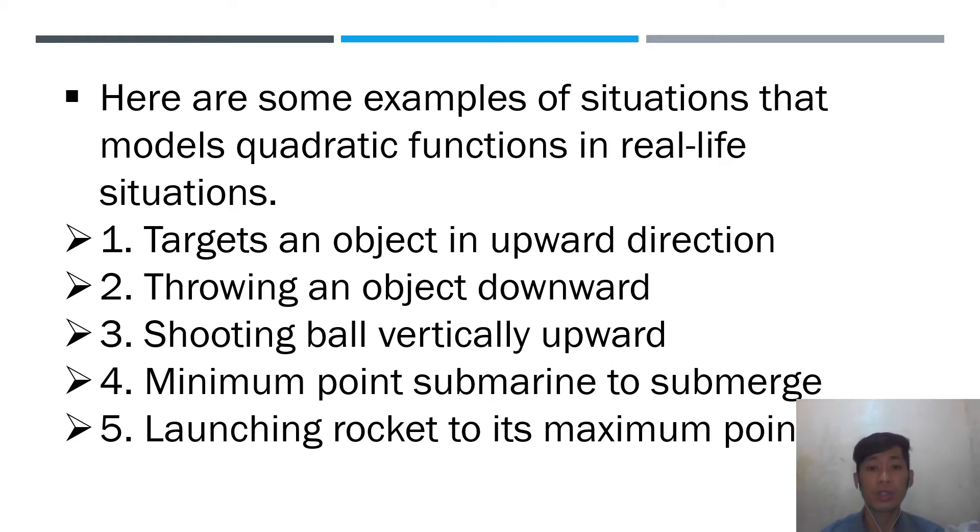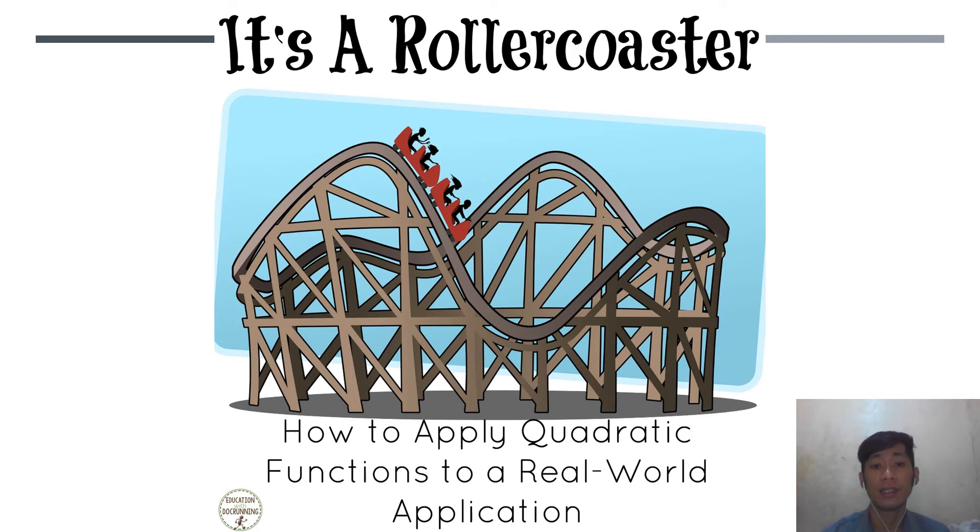So ito yung mga pictures na susunod po na ipapakita po. Yan po yung mga halimbawa na maipapakita natin yung parabola o yung graph of quadratic function. First, a roller coaster. So kung mapapansin nyo po, yung roller coaster, meron po siyang part that is a parabola. Upward, this is downward. Upward, downward.